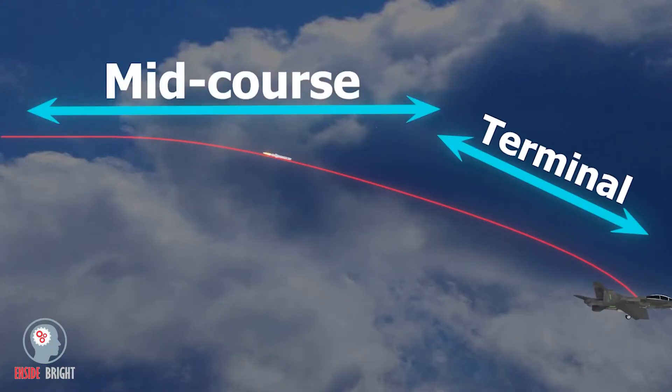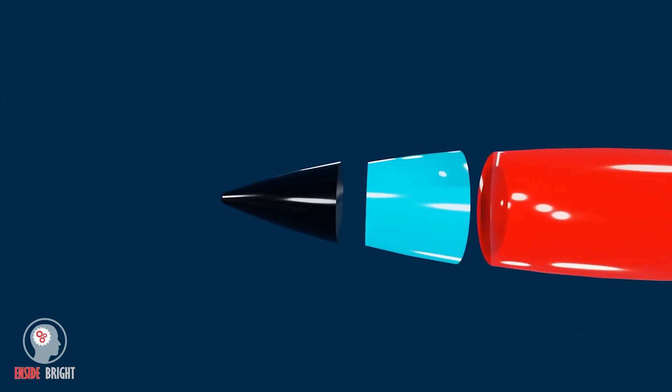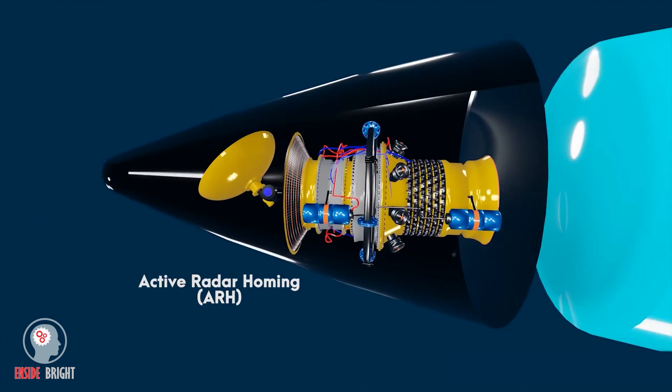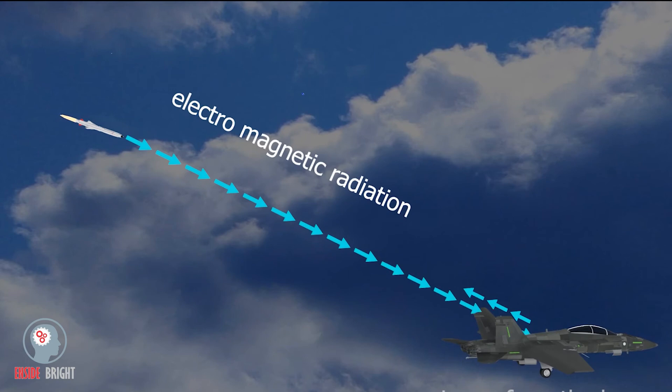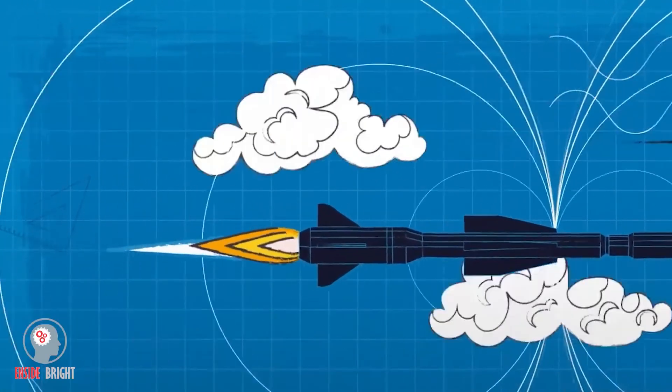In terminal phase path, the missile uses active radar homing system. An active radar homing system is installed at the beginning of the missile, which sends electromagnetic radiations towards its target. These radiations hit the target and bounce back to the receiver.